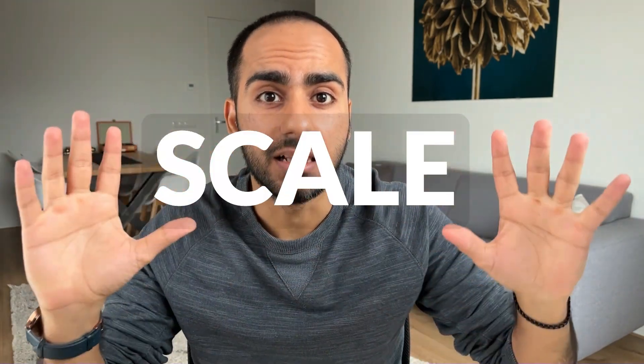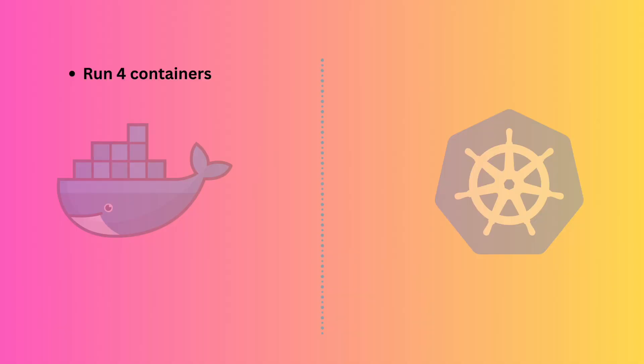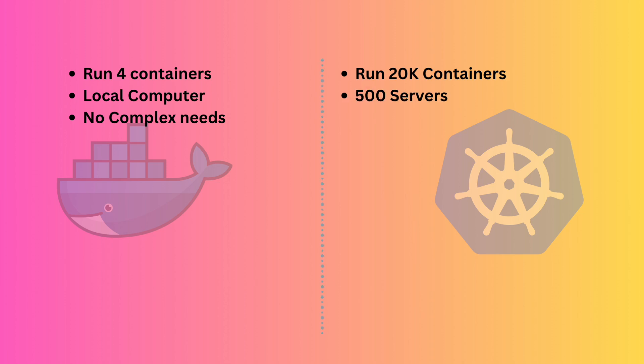Now there is a bit of an overlap. Docker allows you to run containers, and Kubernetes allows you to run containers. The difference comes at scale. If you want to run four containers on your local computer that don't have complex needs, Docker run is probably fine. But if you want to run 20,000 containers across 500 servers in three different data centers, you're going to need an orchestrator.